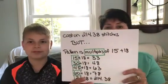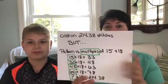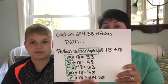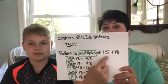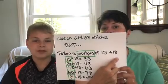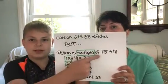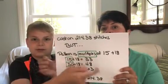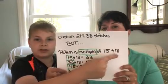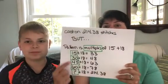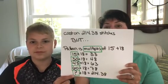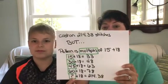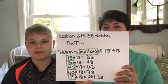This pattern is calculated as a multiple of 15 plus 18 stitches — the designer tells you this in the pattern, though sometimes you don't have that information. So it could be 15, 30, 45... plus 18, but 18 only once. That means 18 is added once and the other number has to be exactly divisible by 15. We needed to figure out which number divisible by 15, plus 18, would be closest to 214.38.